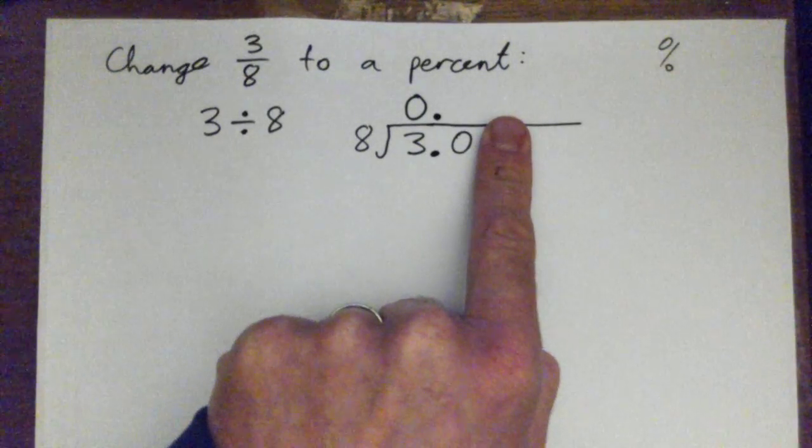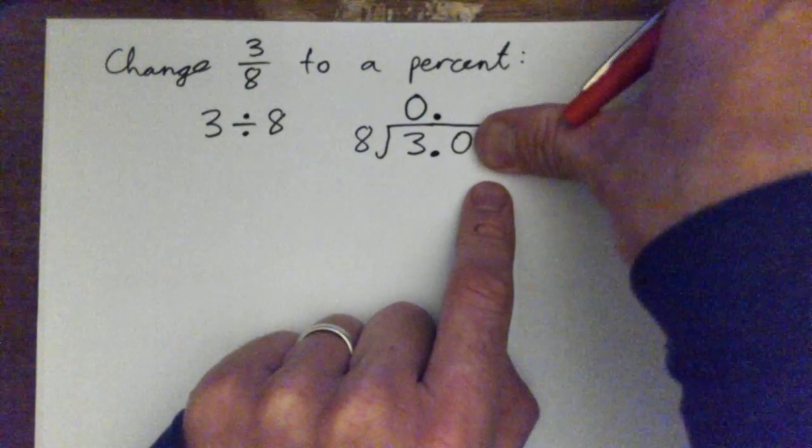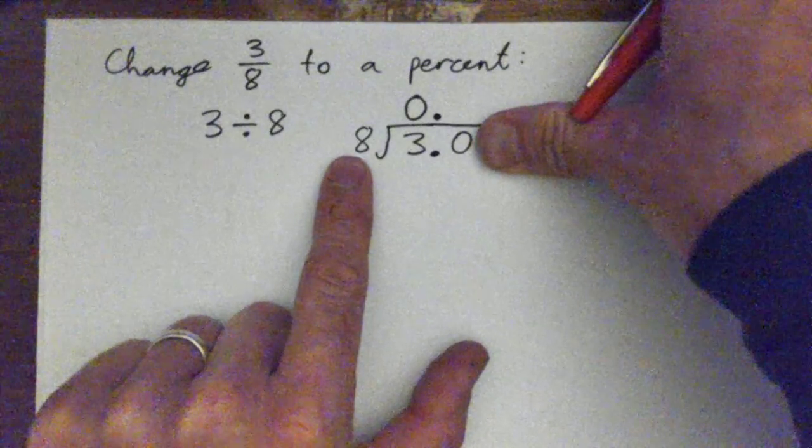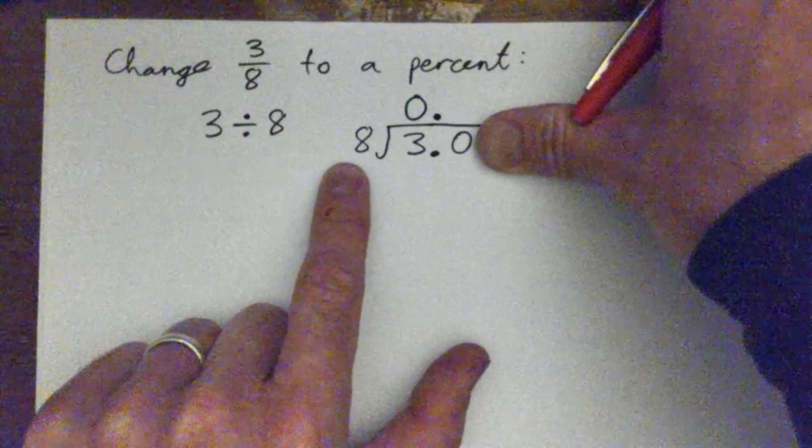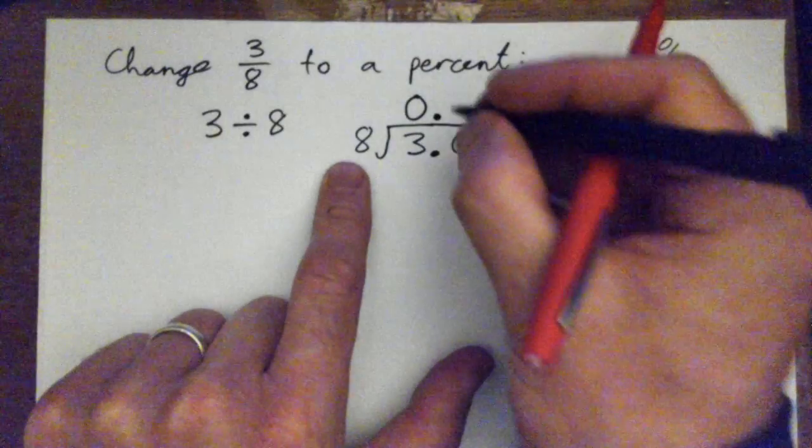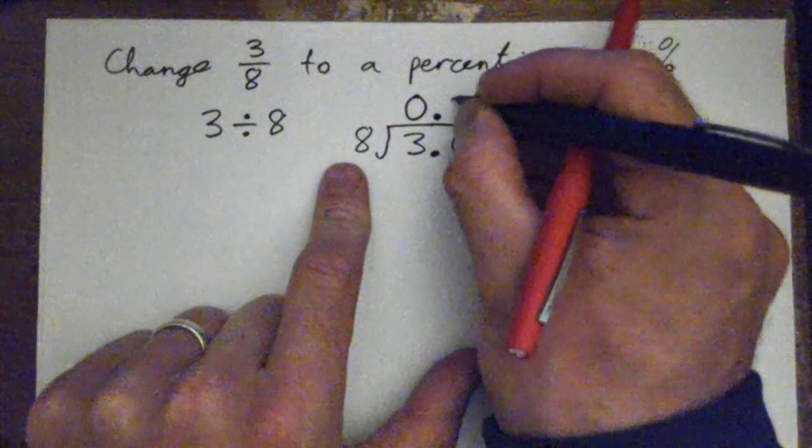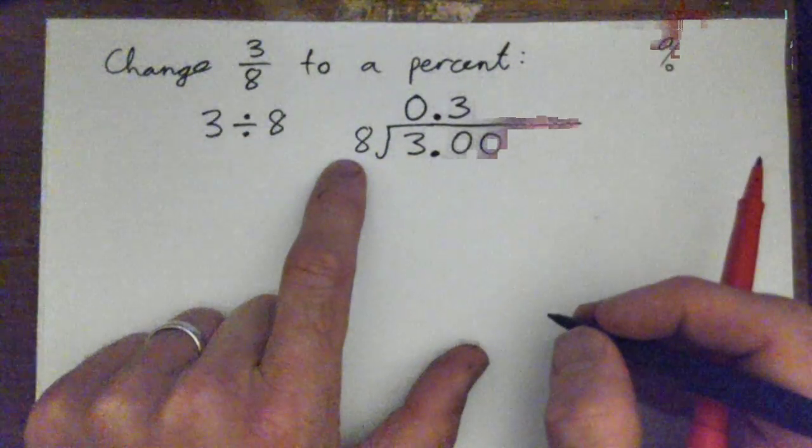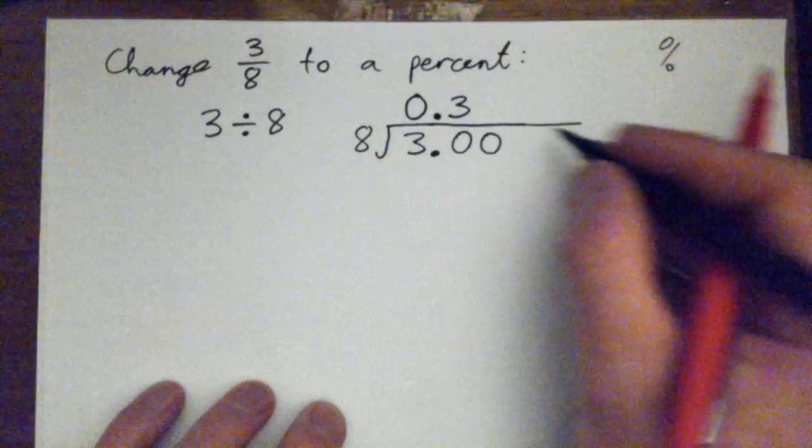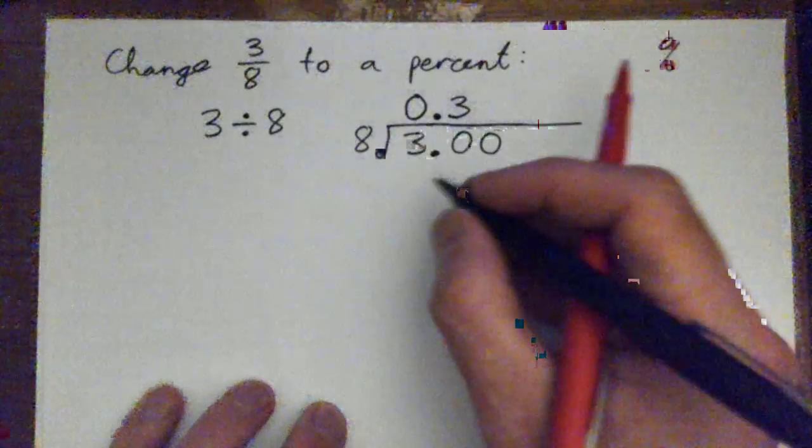And then I'll just do this. Eight into thirty. What's eight into thirty? Three times, yep. And three-eighths is twenty-four. Let's do a little long division. That's fine. Three times eight is twenty-four.